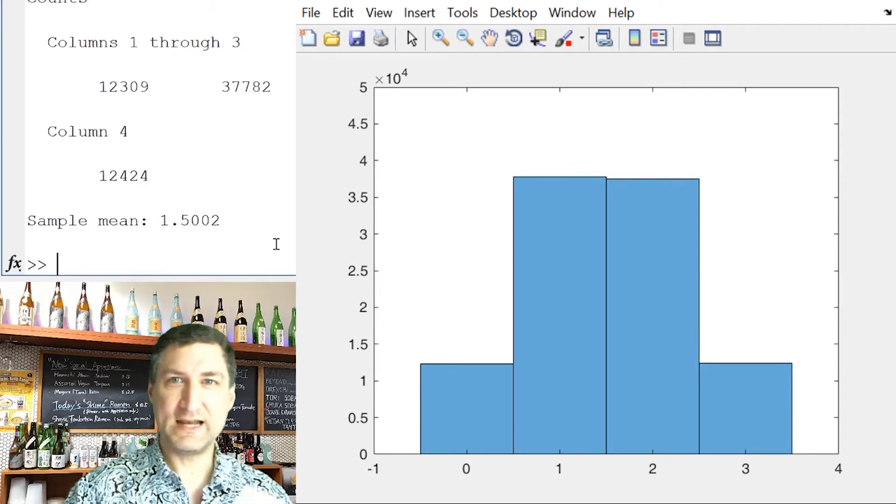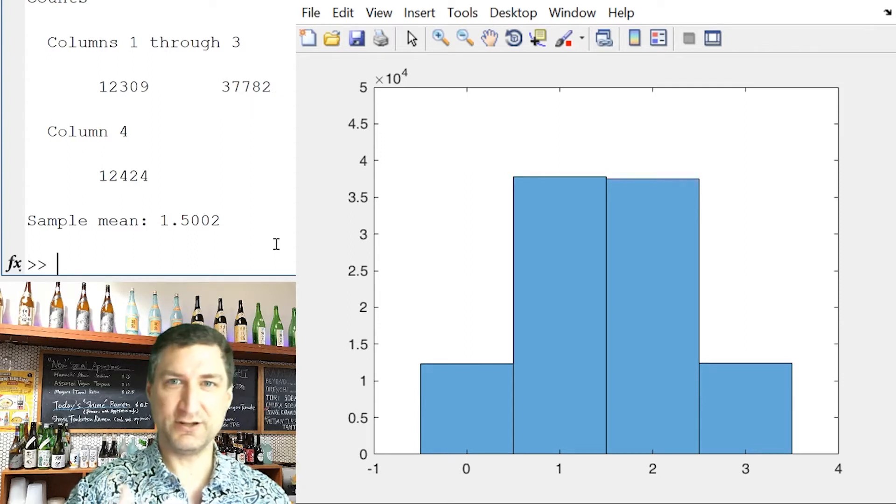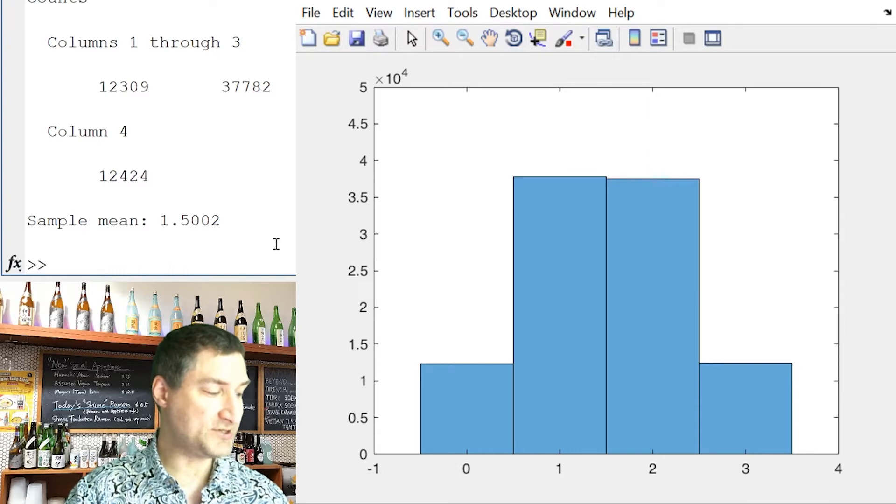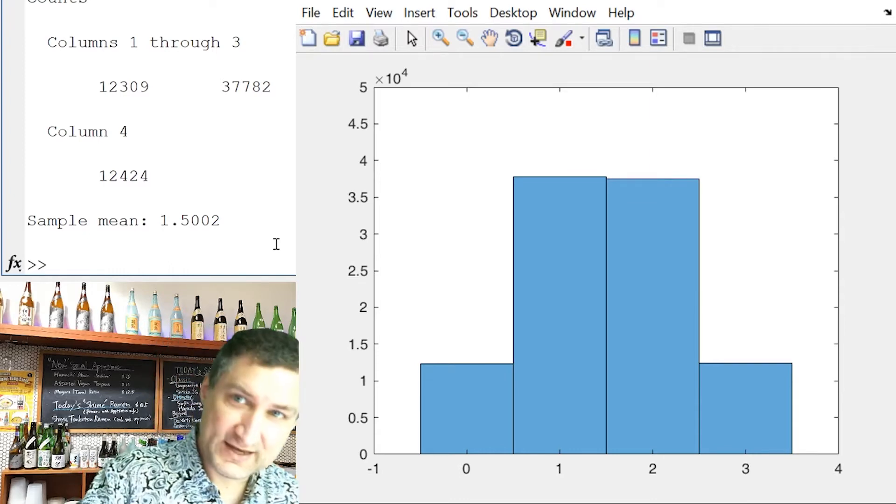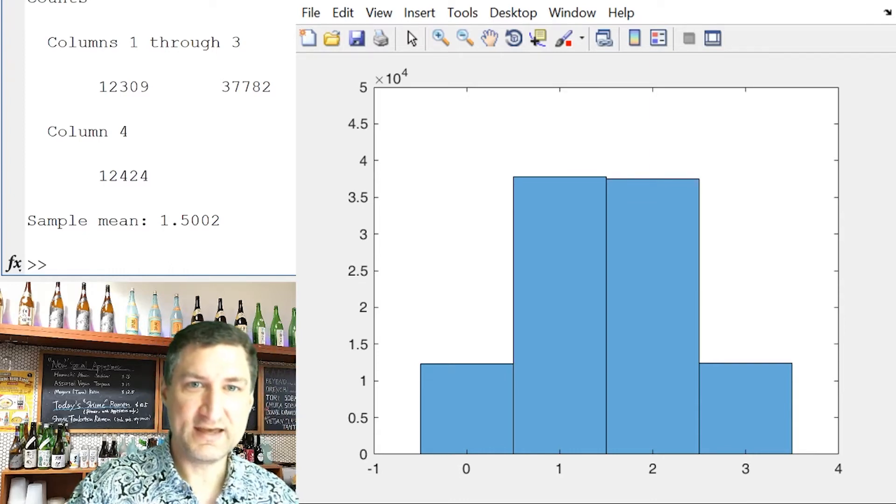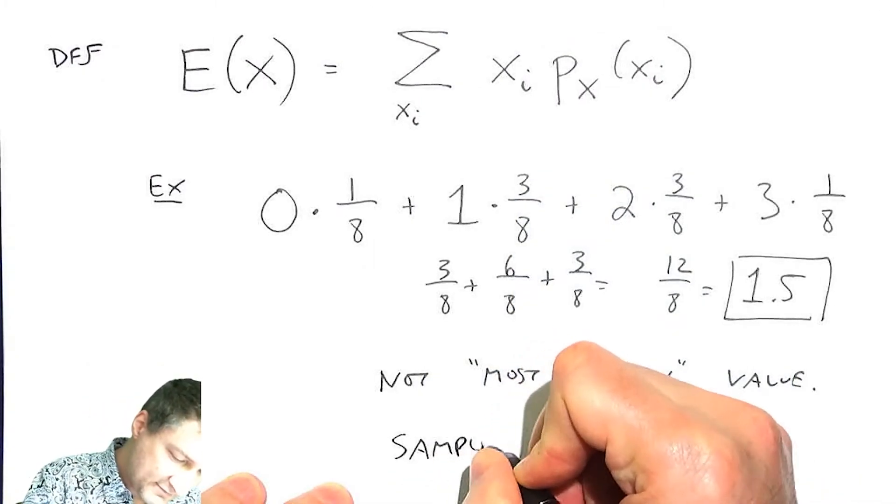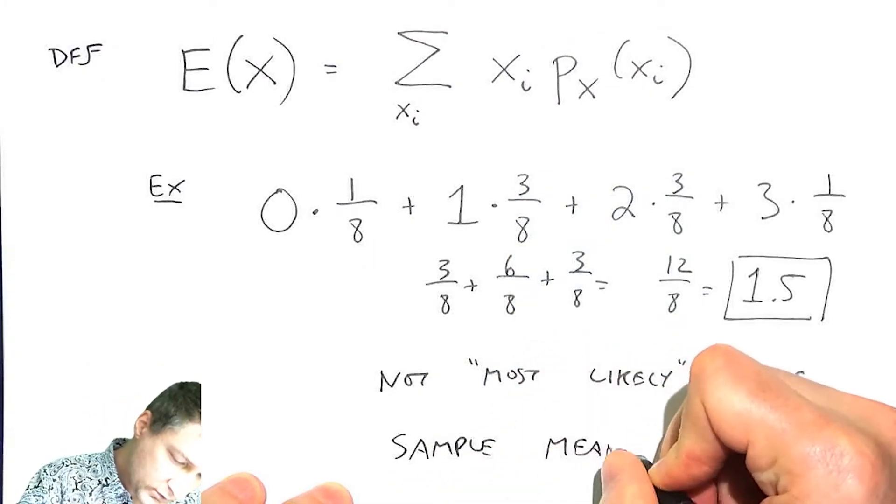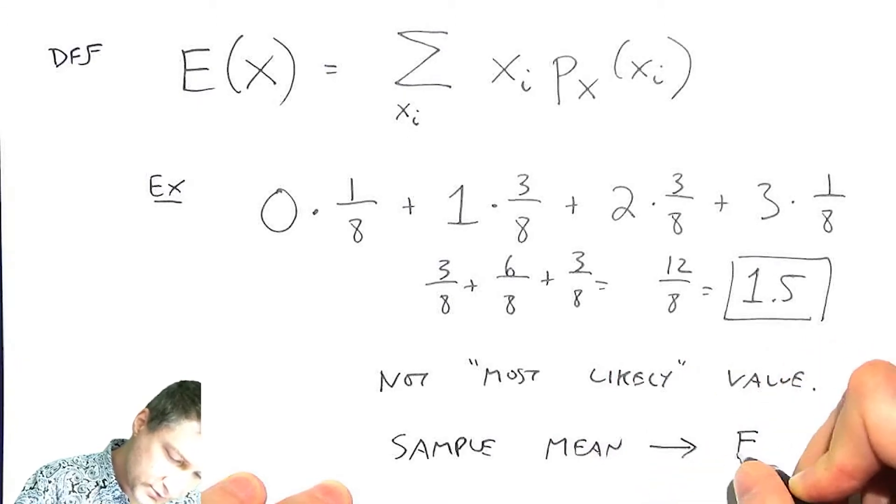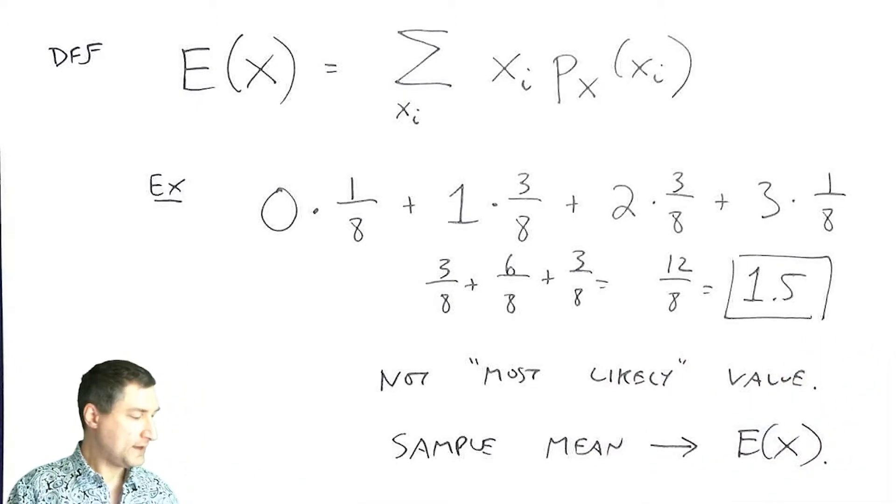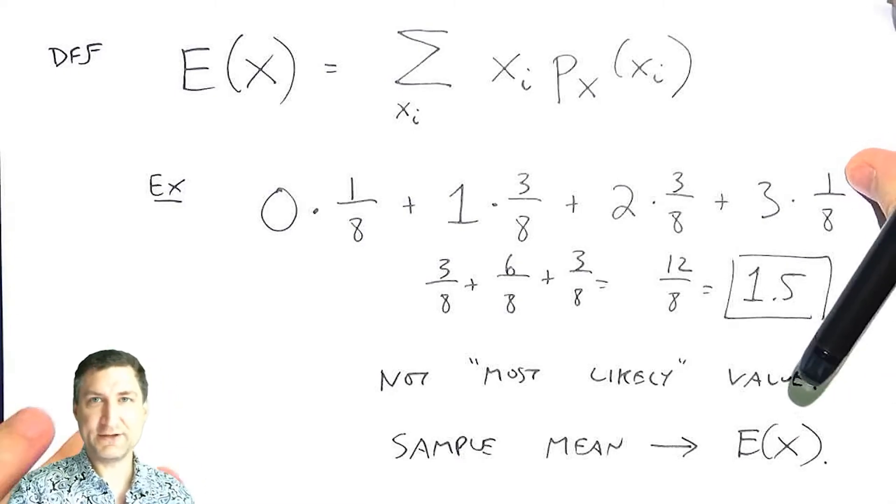And so this is, again, kind of a connection to the laws of large numbers that we started to introduce in previous lectures, and then we're going to come back to again. So the kind of take home message here is that in the limit, the sample mean that we have will converge to the expected value of X. All right, so let's look at the expected values for some of the other random variables that we introduced and gave names to before.